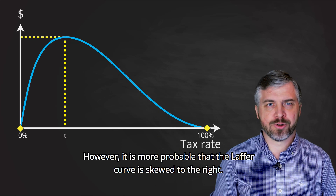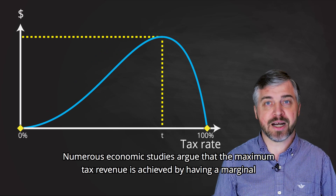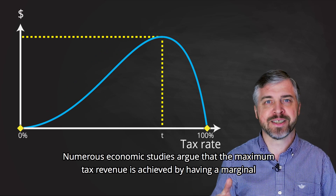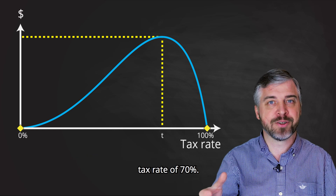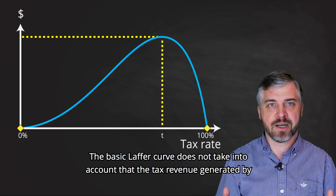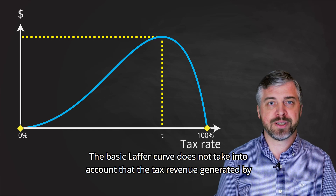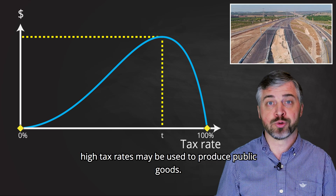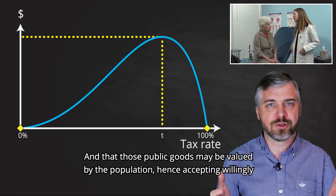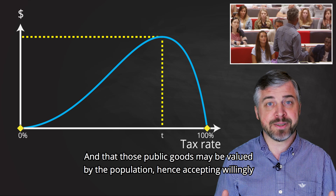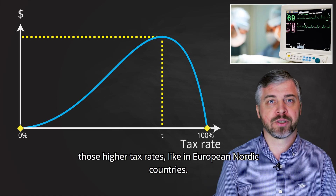However, it is more probable that the Laffer Curve is skewed to the right. Numerous economic studies argue that the maximum tax revenue is achieved by having a marginal tax rate of 70%. The basic Laffer Curve does not take into account that the tax revenue generated by high tax rates may be used to produce public goods, and that those public goods may be valued by the population, hence accepting willingly those higher tax rates — like in European Nordic countries.